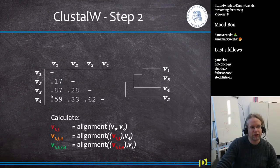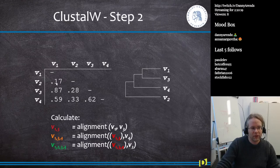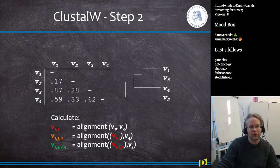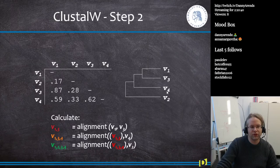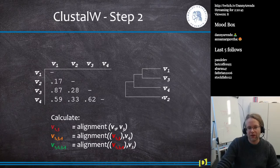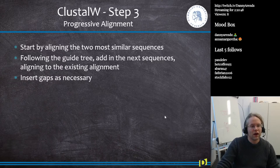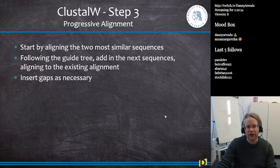If we do the pairwise alignment of all of these sequences, we see that V1 and V3 are the sequences with the highest similarity — 0.87. So these cluster together first. We align V1 versus V3, then the next sequence added is V4, because V4 is closest to V1 and V3, and then V2 is introduced last. We start by aligning the two most similar sequences, follow the guide tree, and insert gaps as necessary.